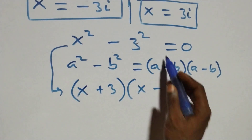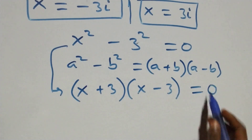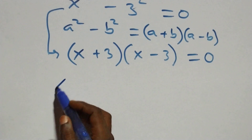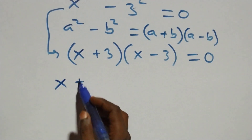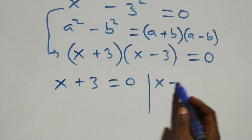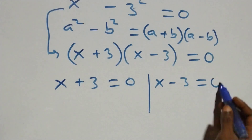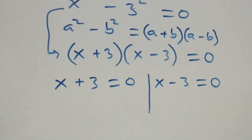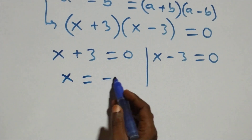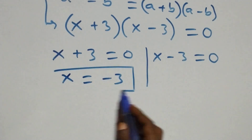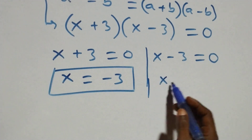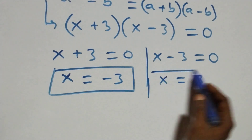From here we also have two cases: x plus three equals zero or x minus three equals zero. This gives x equals minus three, which is a real solution, and x equals three, which is also a real solution.